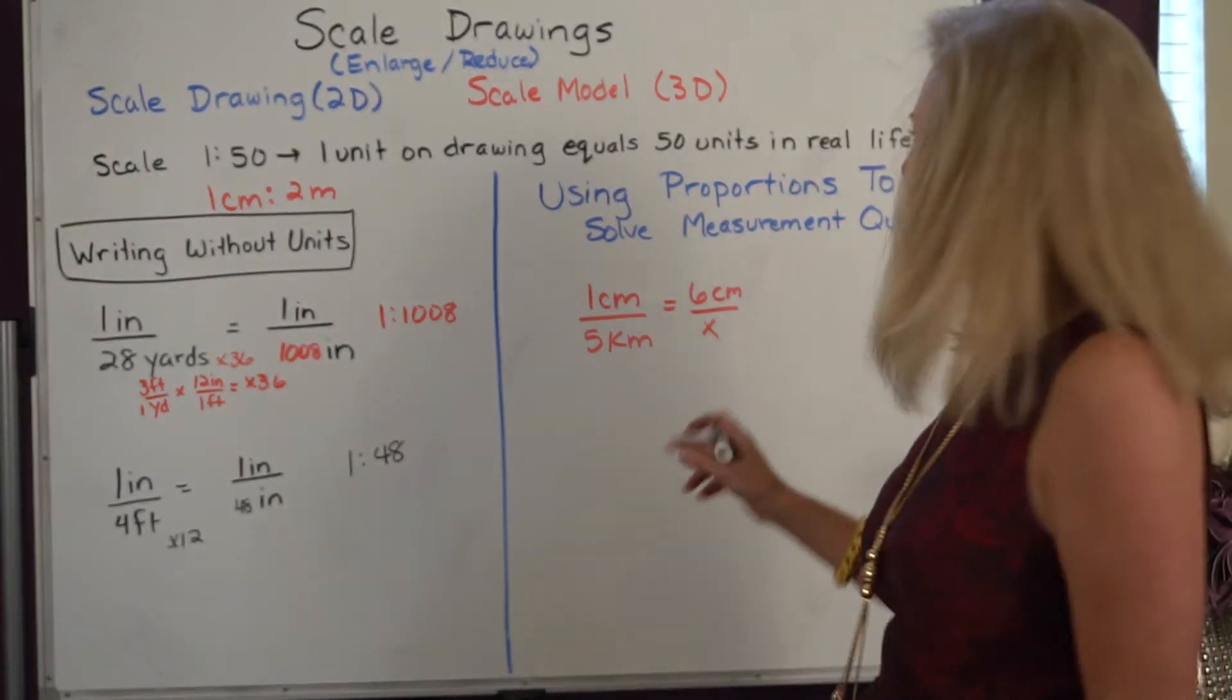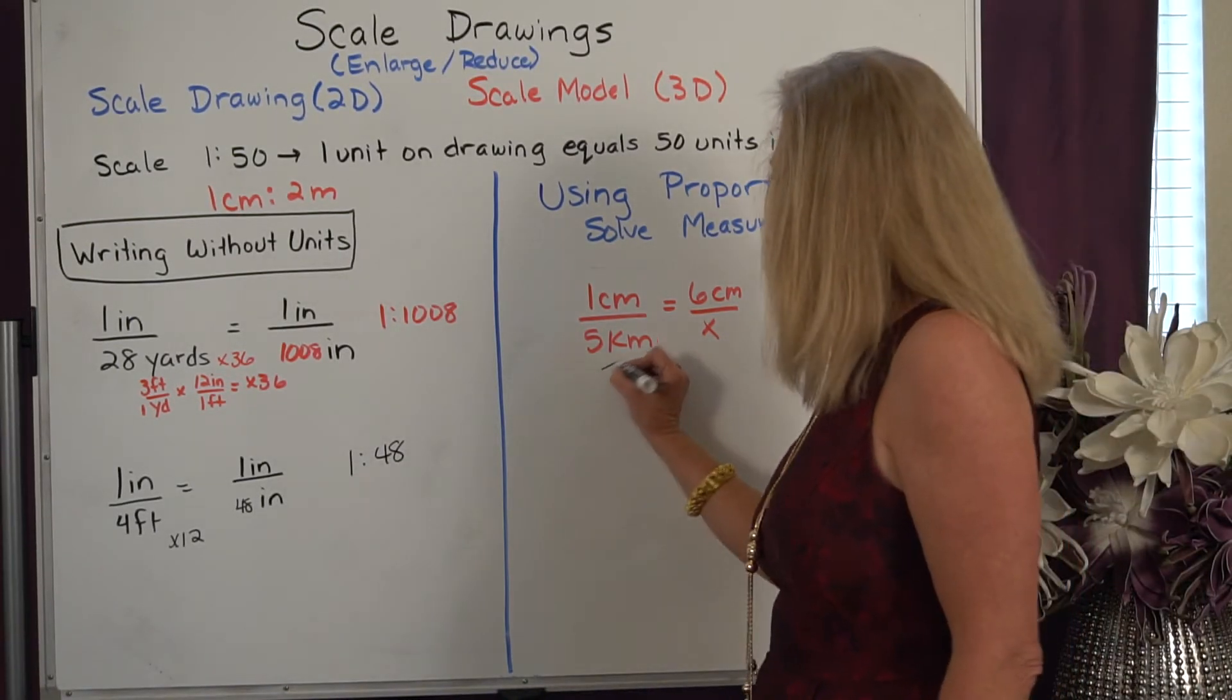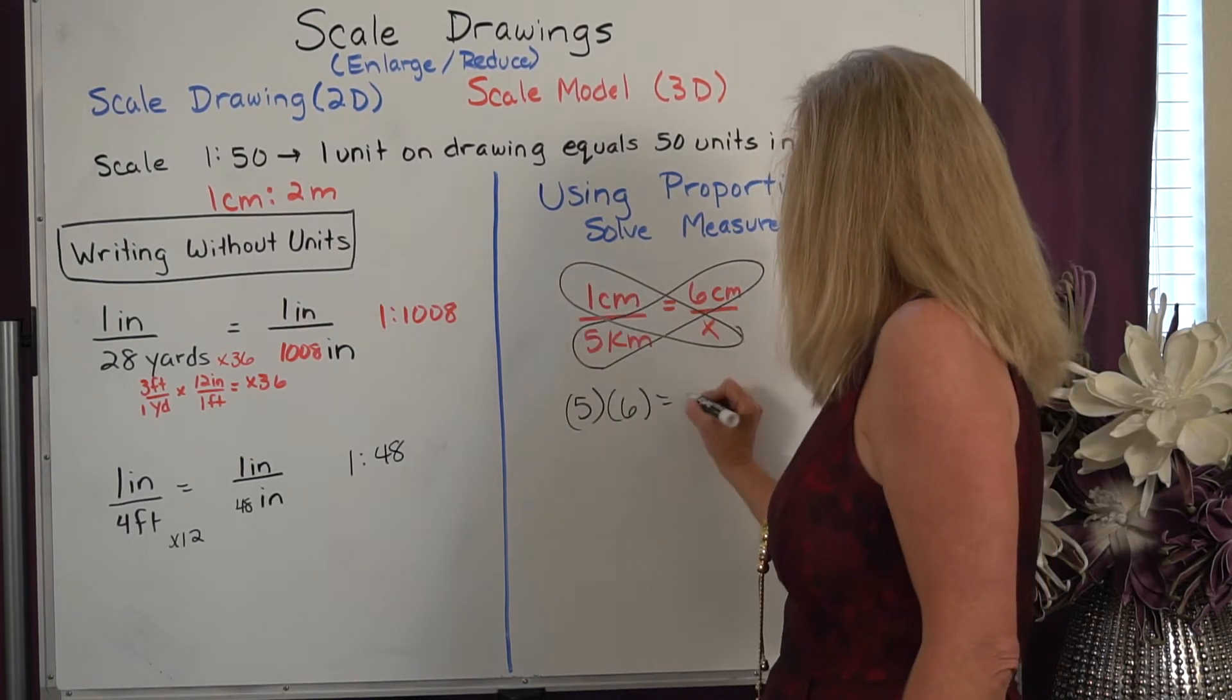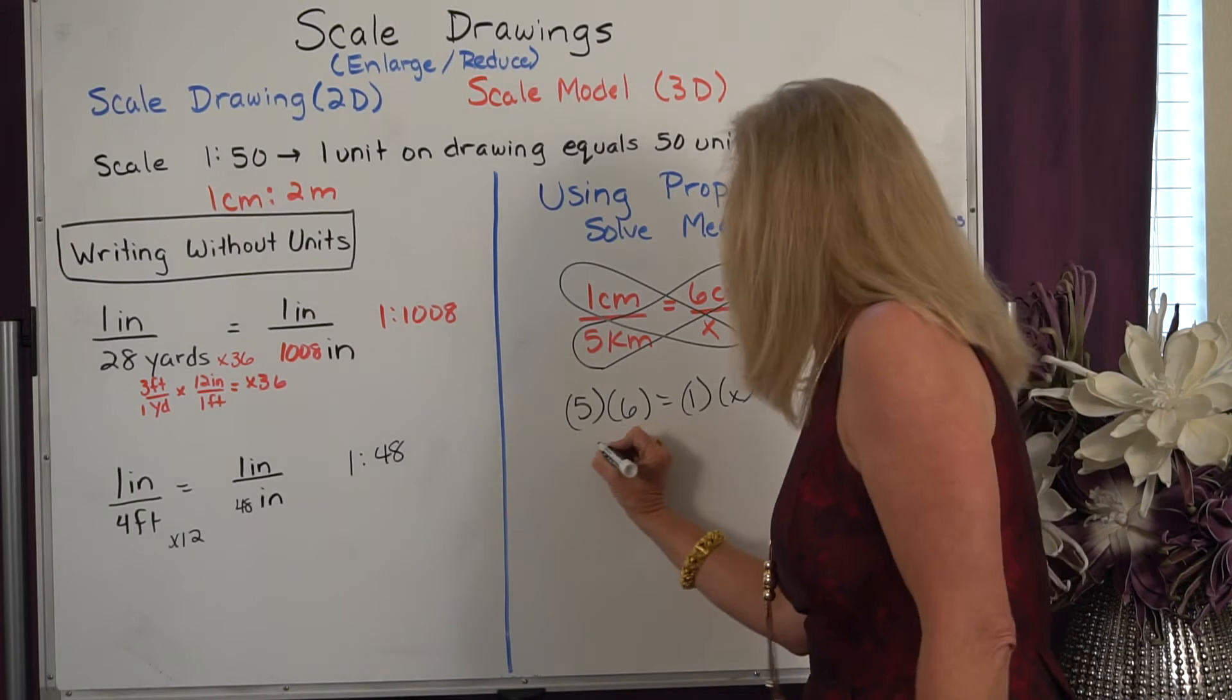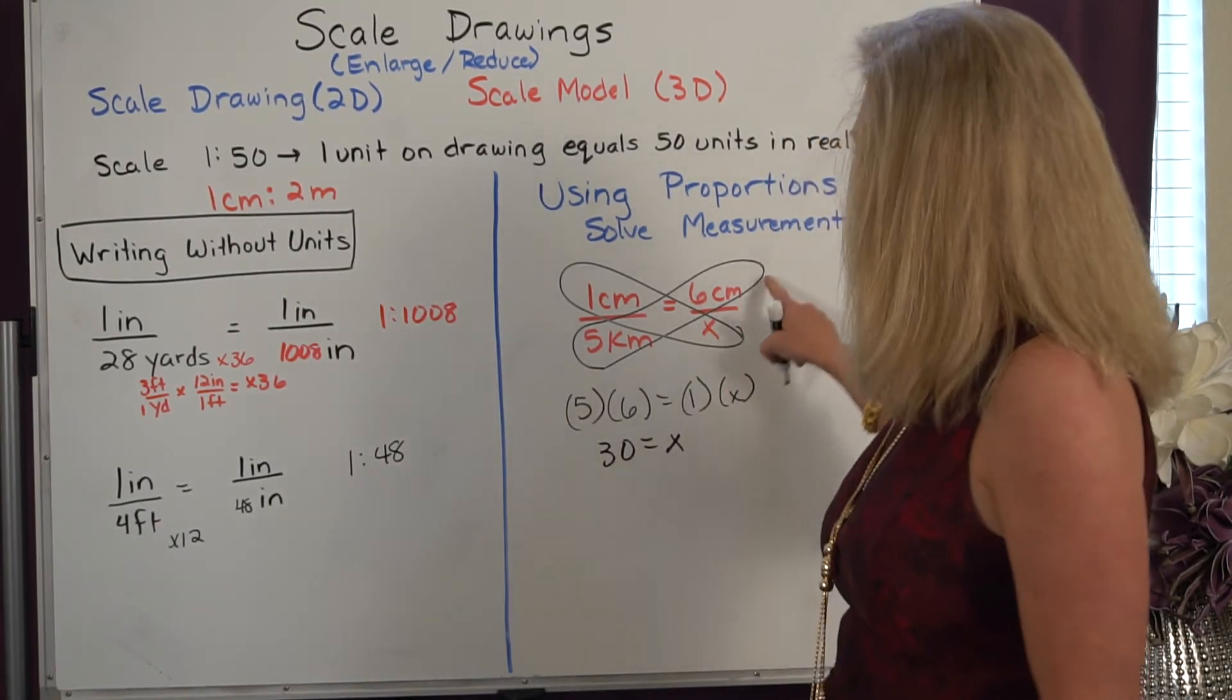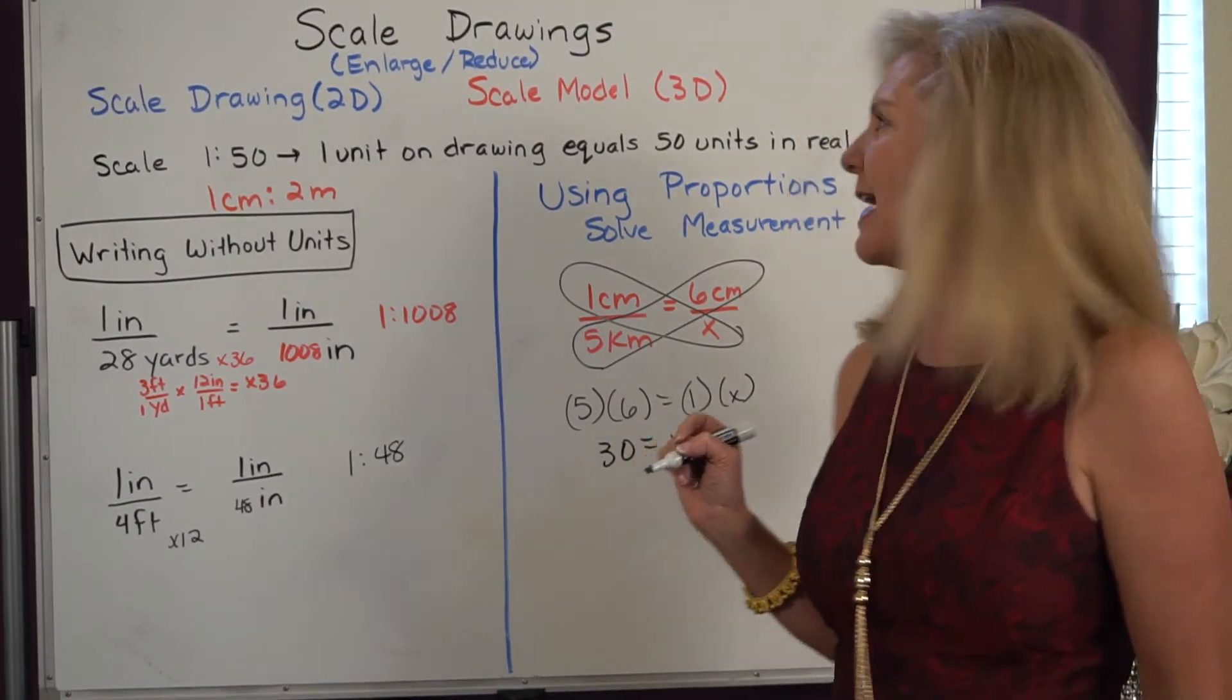Well what if I wanted to know, if one centimeter is five kilometers how much is six centimeters? This is where I use proportions. We can use cross products so five times six is equal to one times x because cross products always solve proportions, so 30 equals x. That means six centimeters on the map is equal to 30 kilometers in real life.